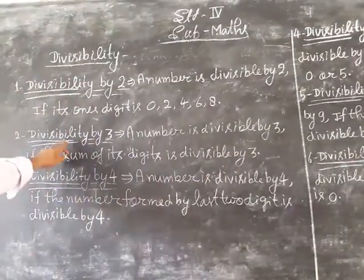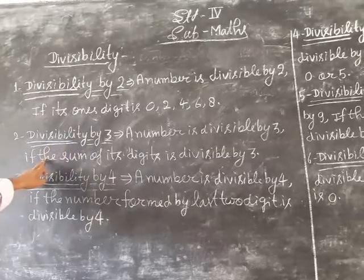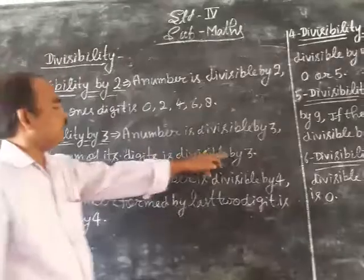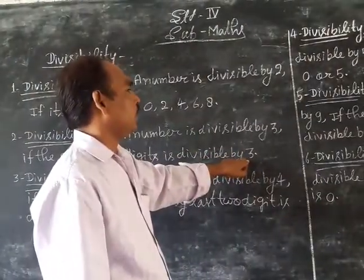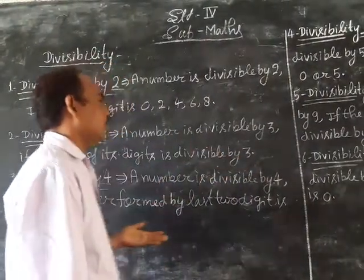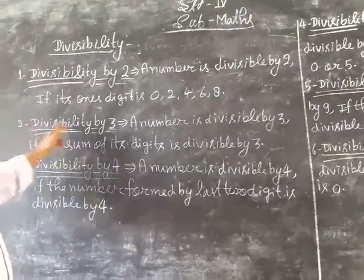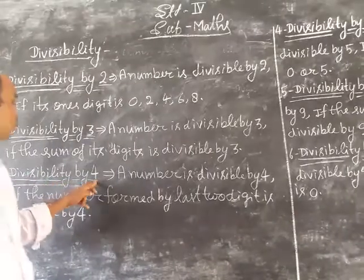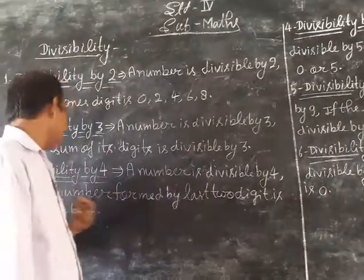Next, divisibility by 4: A number is divisible by 4 if the number formed by the last two digits is divisible by 4.